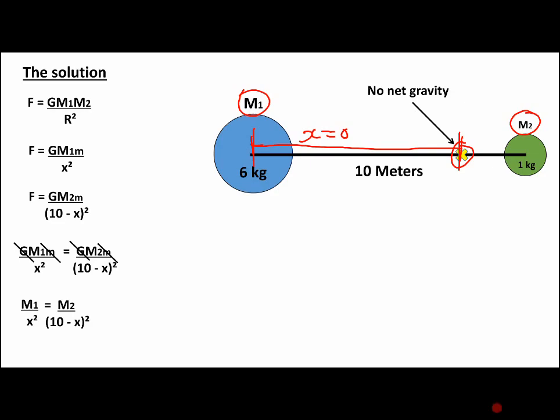Now we cross multiply, which gives us M1 times 10 minus X squared. If we expand 10 minus X squared, that's what we end up with. I'm taking it through as many steps as I can to help you with the math.